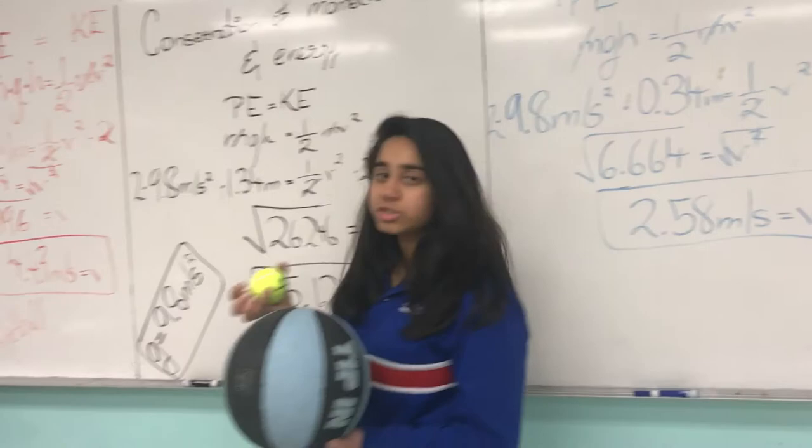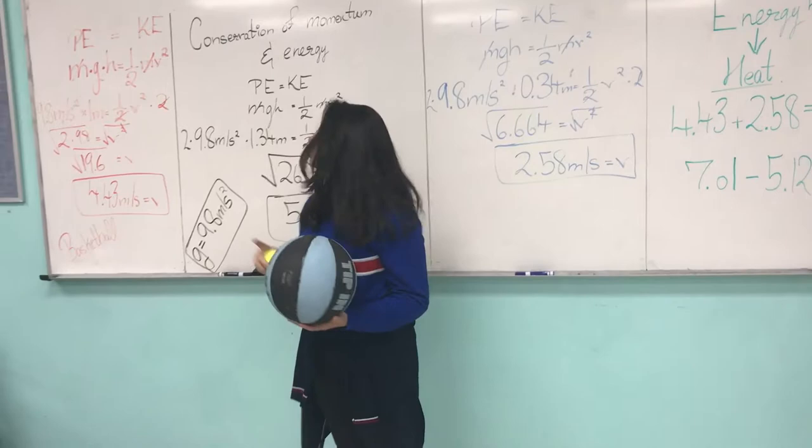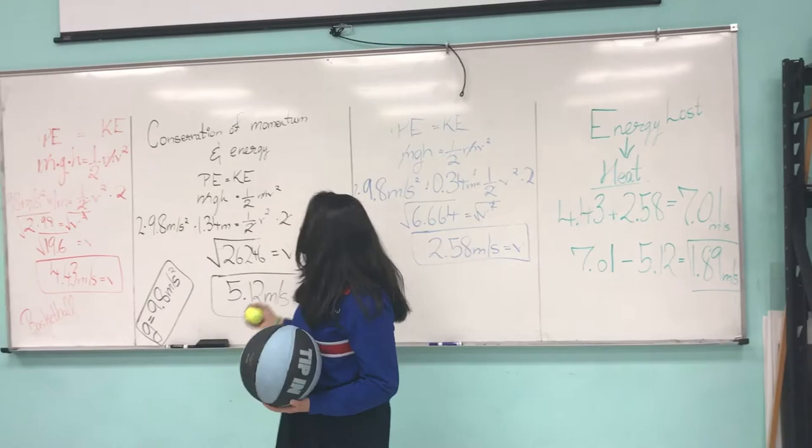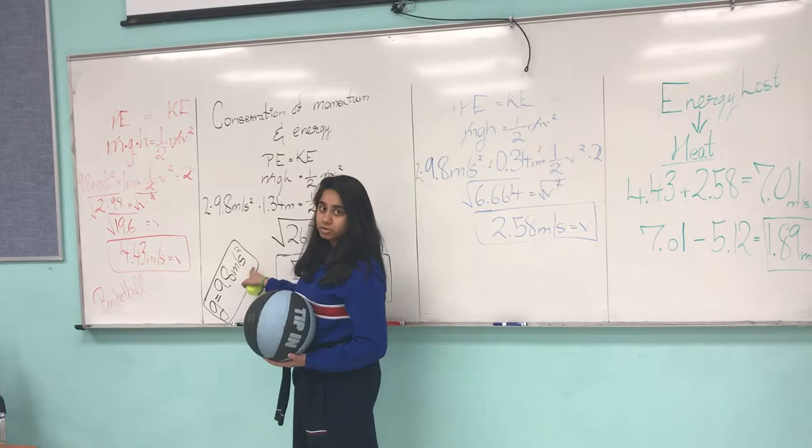The height at which I drop both these balls is 1.34 meters. The height of the basketball ball is 1 meter while the height of the tennis ball is 0.34 meters. And the gravity over here is 9.8 meters per second squared.